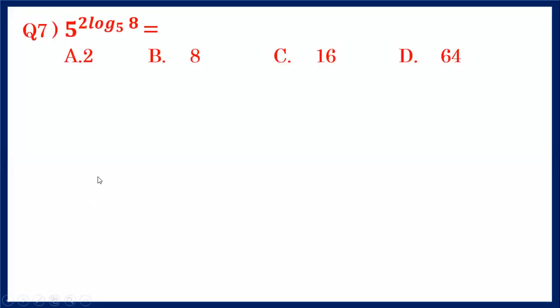Hi everyone, here is a question from logarithms. The question is: 5^(2log₅8) equals A) 2, B) 8, C) 16, or D) 64. To solve this, we should have an idea about a few laws of logarithms.